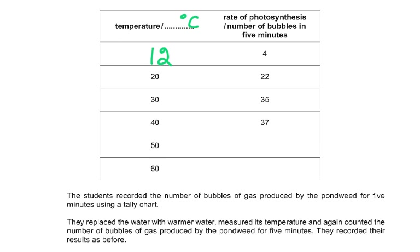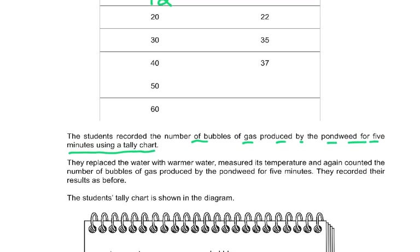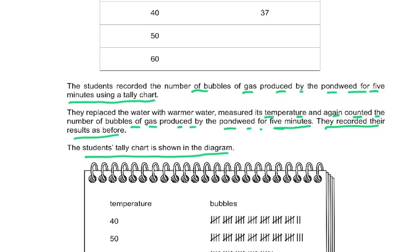The student recorded the number of bubbles of gas produced by the pondweed for five minutes using a tally chart. They then replaced the water with warmer water, measured its temperature, and again counted the number of bubbles of gas produced by the pondweed for five minutes. They recorded the results as before.